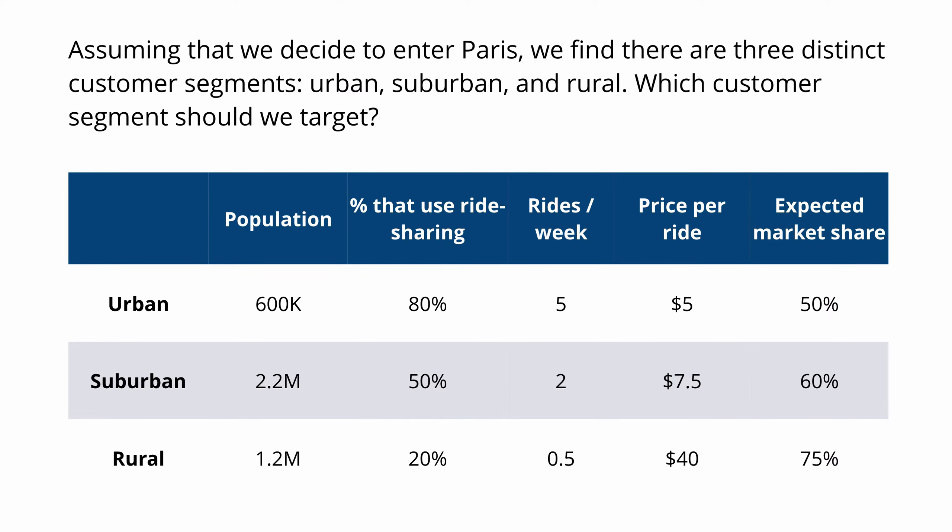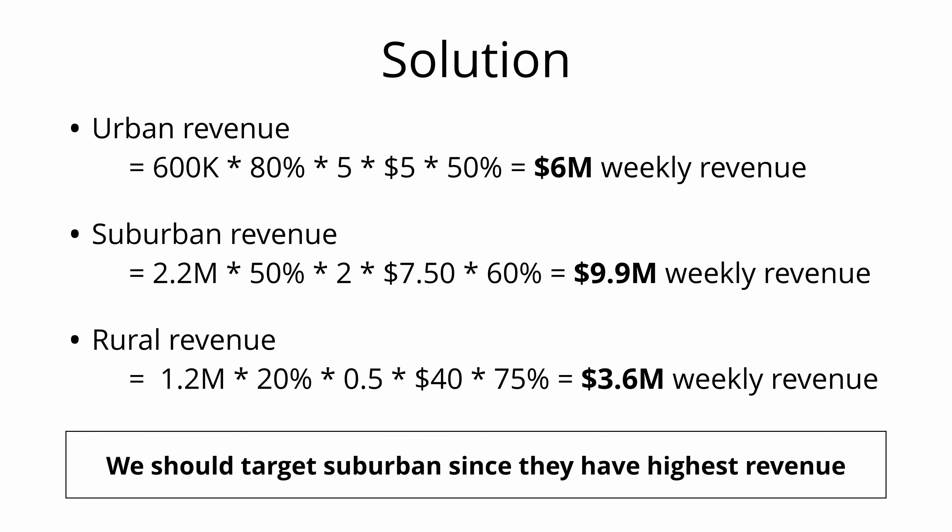Assuming that we decide to enter Paris, we found three distinct customer segments — urban, suburban, and rural. Which customer segment should we target? Pause the video now to answer this question. We can calculate revenue for each segment by multiplying the population with the percentage that use ride-sharing, then with the average rides per week, then with the average price per ride, and then with average market share. This gives us $6 million weekly revenue for the urban segment, $9.9 million for the suburban segment, and $3.6 million for the rural segment. Thus, we should target the suburban segment since it yields the highest revenue.